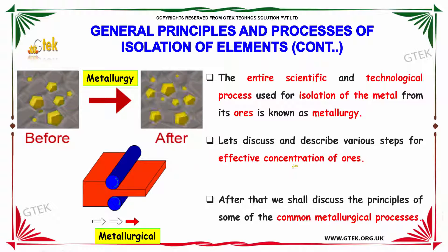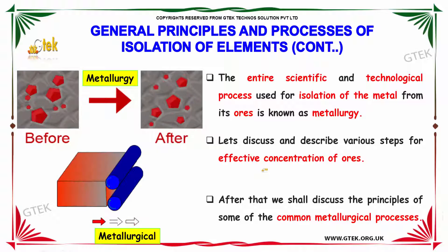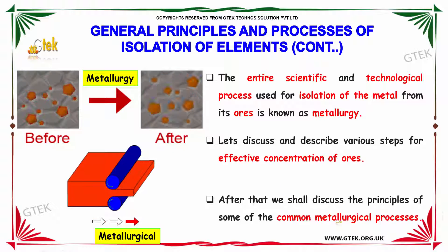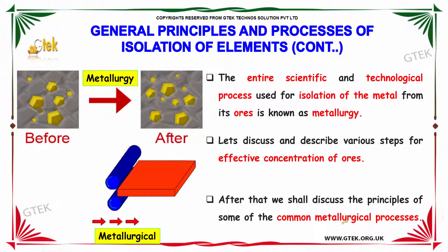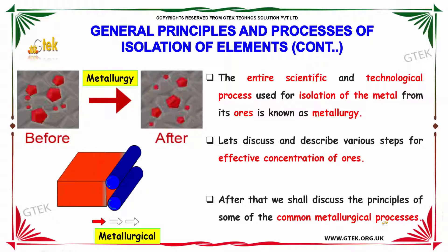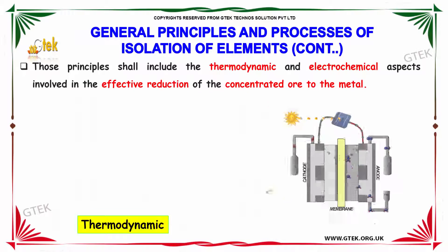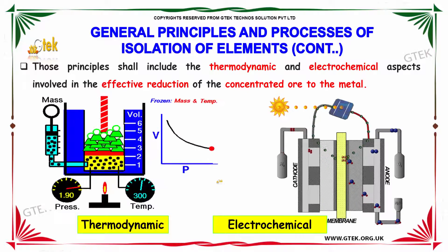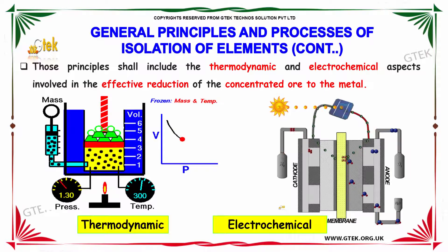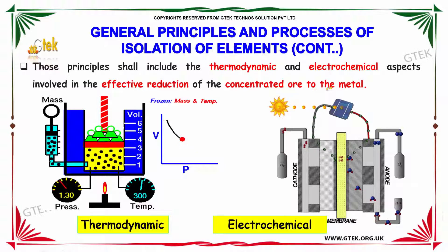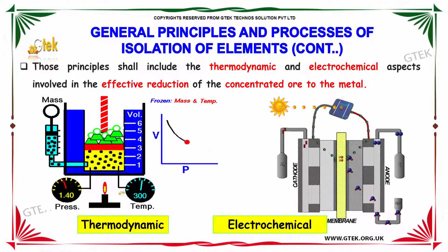We are going to talk about the steps for effective concentration of ores and the principles of common metallurgical processes. These principles involve thermodynamic and electrochemical aspects involved in the effective reduction of the concentrated ores to the metal. Here is the thermodynamic process and here is the electrochemical process.